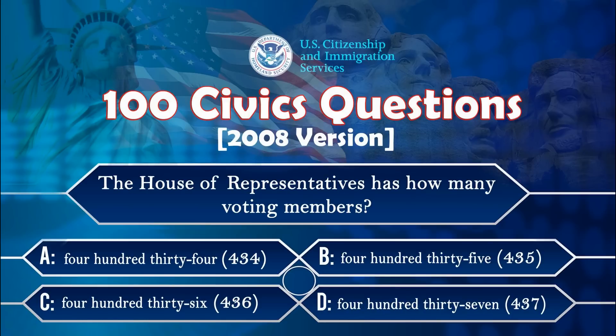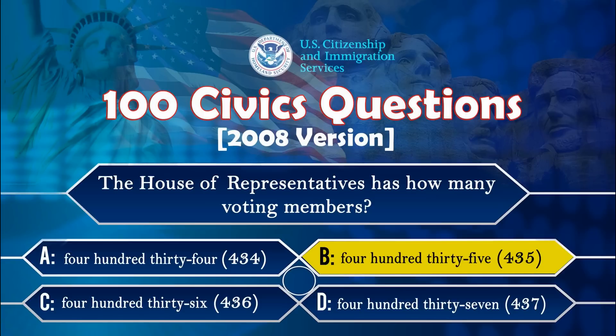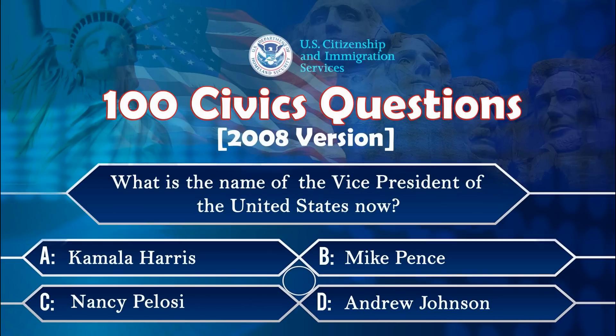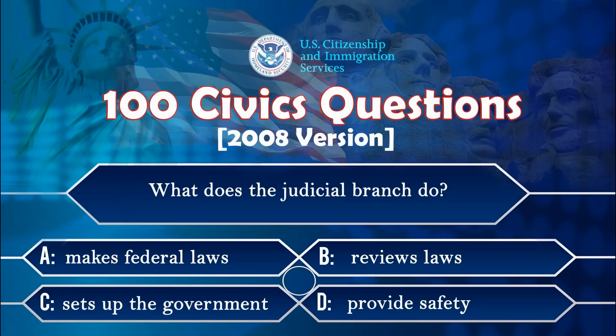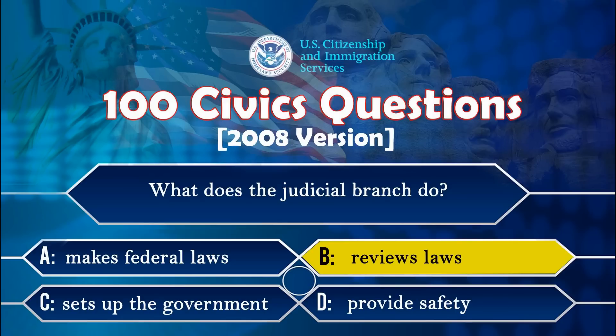The House of Representatives has how many voting members? What is the name of the vice president of the United States now? Kamala Harris. What does the judicial branch do? Reviews laws.